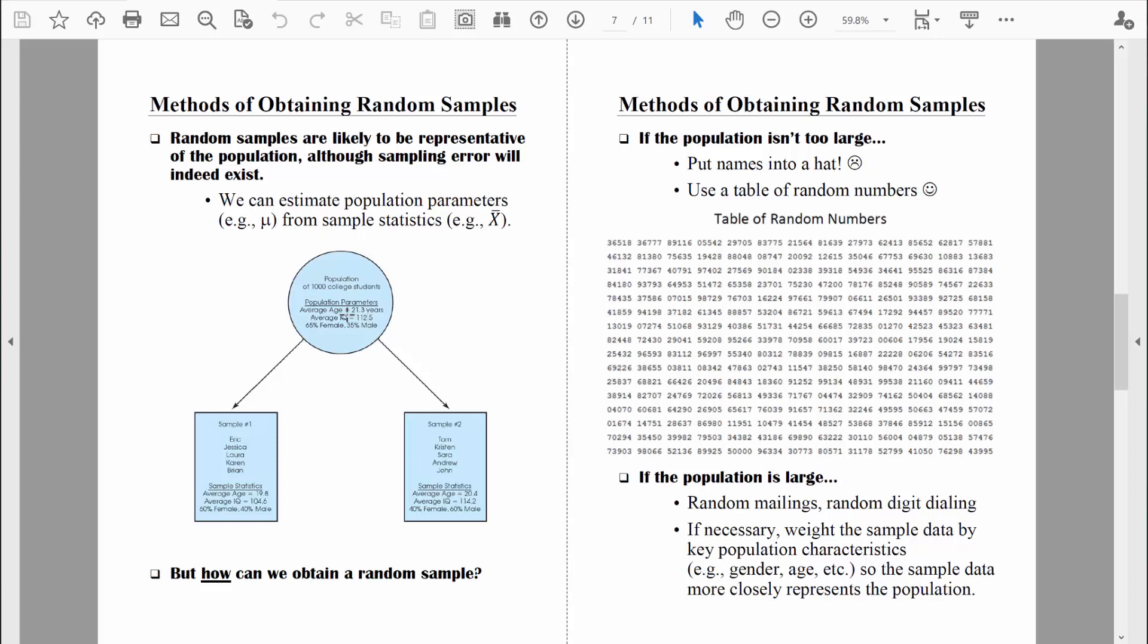So we can select a random sample from that population, and then from that random sample compute some sample statistics. In this particular sample, we see that the average age is 19.8 years old. That's not exactly equal to 21.3 simply because of sampling error.